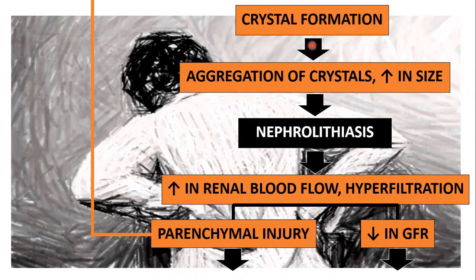If this would continuously occur, there would be aggregation of crystals. As it progresses, they would increase in size and lead to nephrolithiasis — the presence of stones in the kidneys. This would now cause an increase in renal blood flow and hyperfiltration, which is related to structural damage, specifically parenchymal injury.